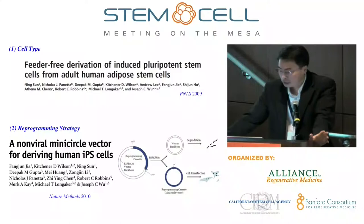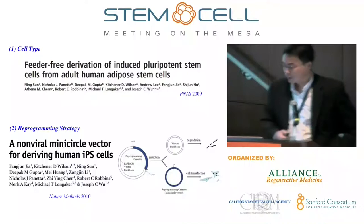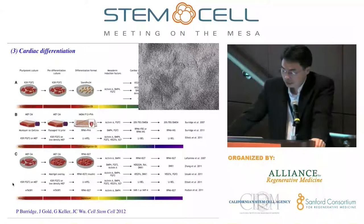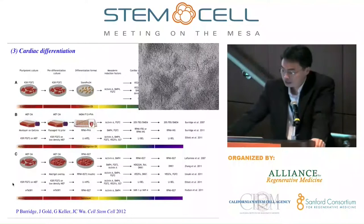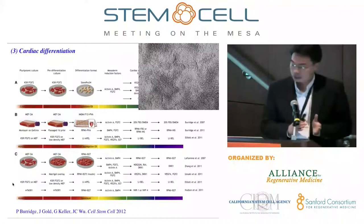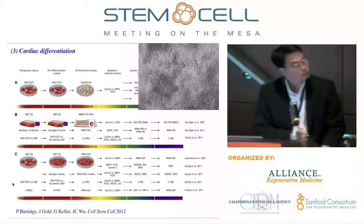For drug screening purposes you could use Sendai virus or lentivirus, but for clinical trials you probably can't use Sendai virus because of the origin of the virus. In terms of cardiac differentiation, back in 2004 when I started the lab, we were very happy getting 5% cardiac differentiation. Right now, our technicians routinely achieve 90–95% cardiac differentiation, which tells you how much the technique has evolved.